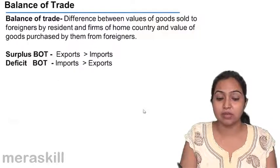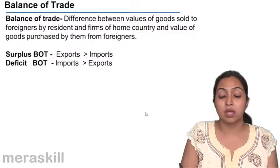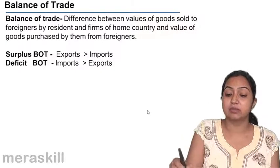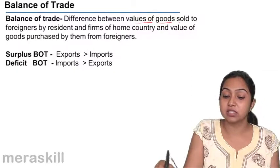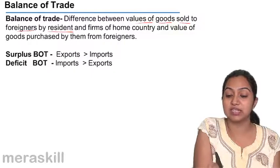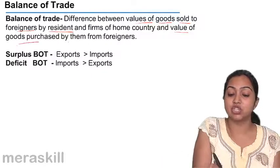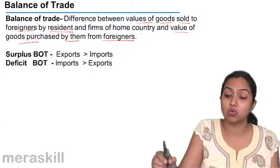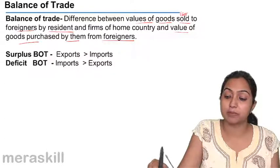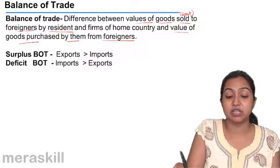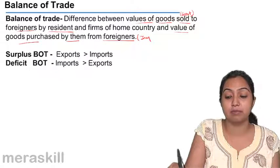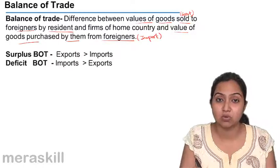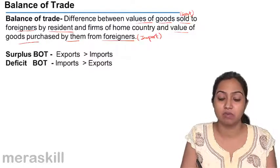Let us understand the concept one by one. Balance of trade means the difference between the value of goods sold to foreigners and the value of goods purchased from foreigners. When I say goods sold to foreigners, I am talking about export, and when I say goods purchased from foreigners, I am talking about import. Export means selling your goods to foreigners and import means buying goods from foreigners.